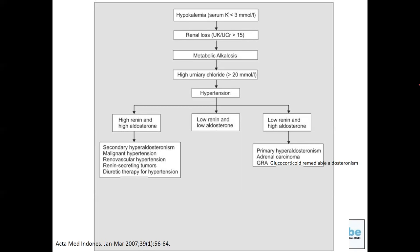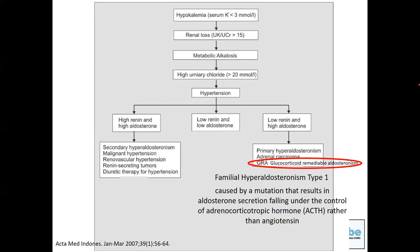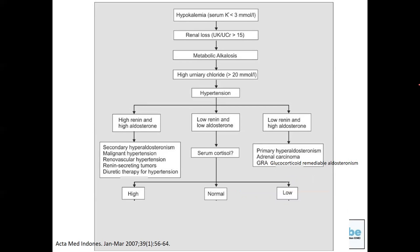If renin is low and aldosterone is high, the primary etiology is in the adrenal gland itself — as high aldosterone suppresses renin via negative feedback. This occurs in primary hyperaldosteronism due to an aldosterone-producing adenoma, adrenal hyperplasia, or adrenal carcinoma. A rare cause is glucocorticoid-remediable aldosteronism, also called familial hyperaldosteronism type 1, a genetic disorder where aldosterone secretion is under ACTH control rather than angiotensin, causing high aldosterone and low renin.